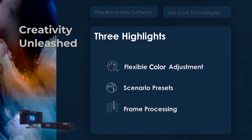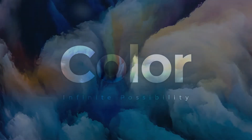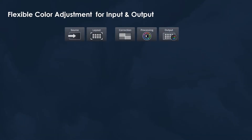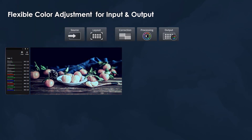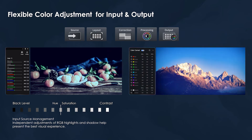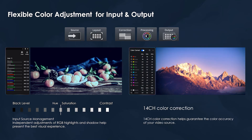Novastar VMP builds on this new platform with three new features. Now let's explore each of these in detail. Novastar's Vision Management Platform allows the user to adjust both the colour input and the colour output. Control the black level and hue, the saturation and contrast, and the RGB highlights and shadows. And output 14-channel colour correction to match the accuracy of video sources, as well as primary, secondary and tertiary colours, without impacting other colours.